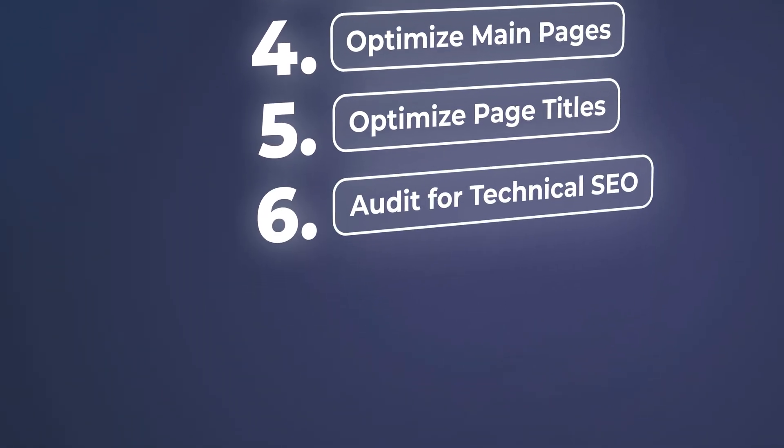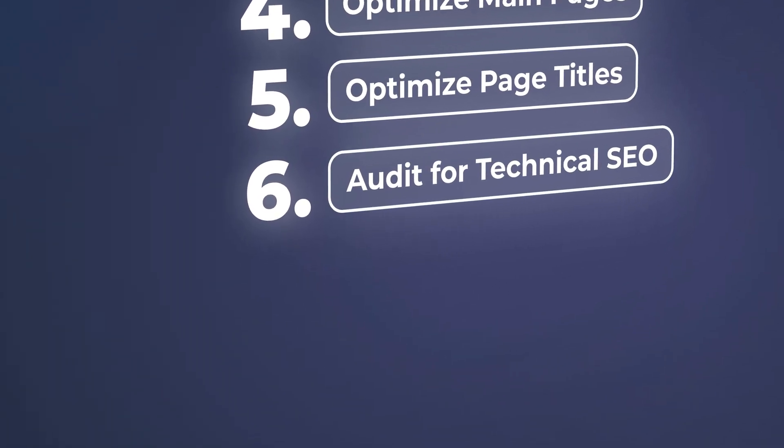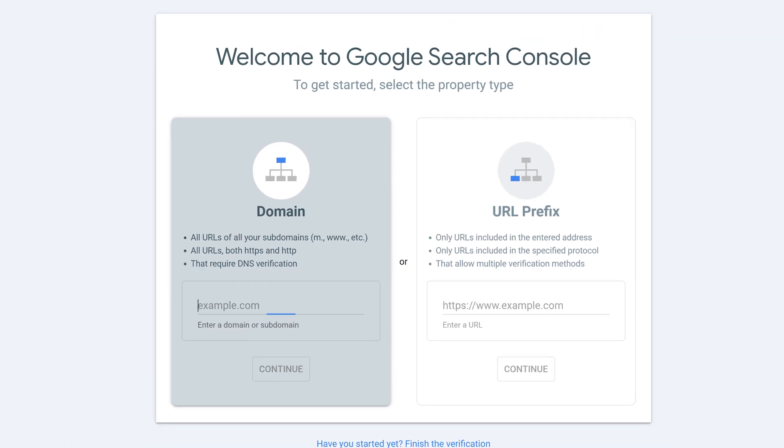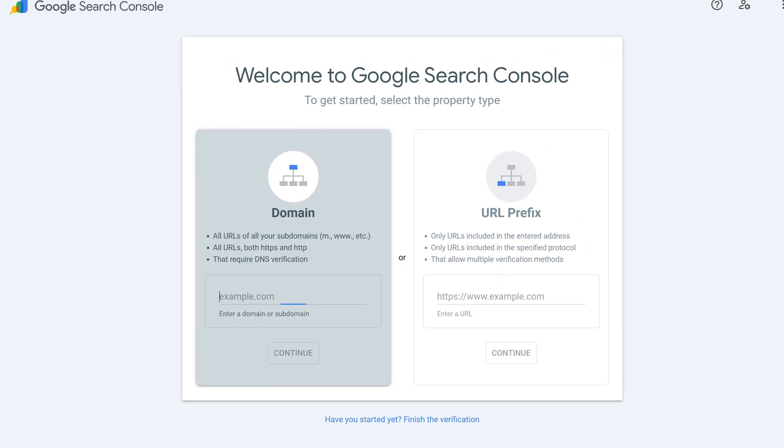Number six, you want to audit for technical SEO — making sure that your site speed is good, making sure that your robots.txt has no issues going on, and making sure that you're checking your Google Search Console for the number of errors and fixing those errors. You can use different auditing tools. Ahrefs has an auditing tool that I really like where you can just keep checking in on issues with your website.